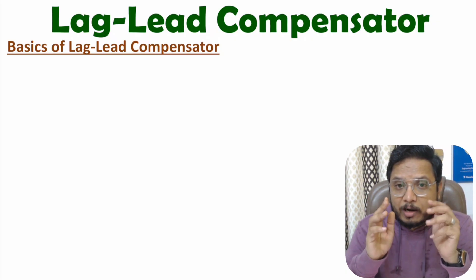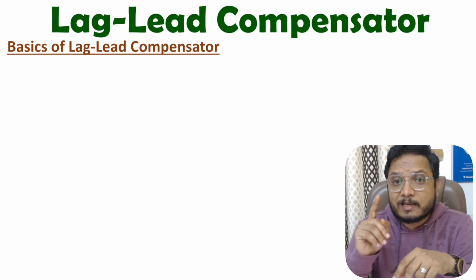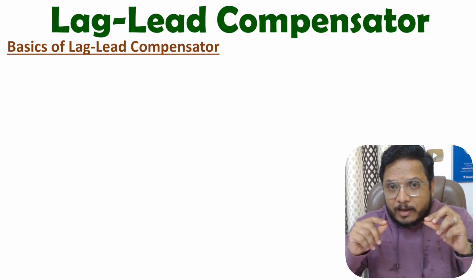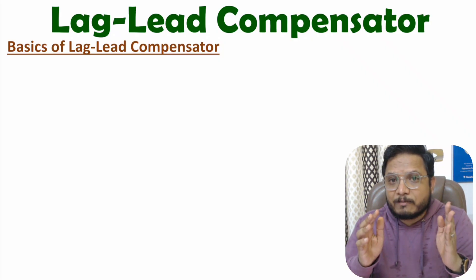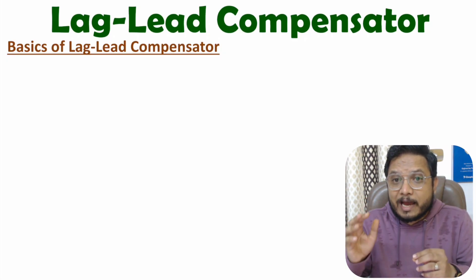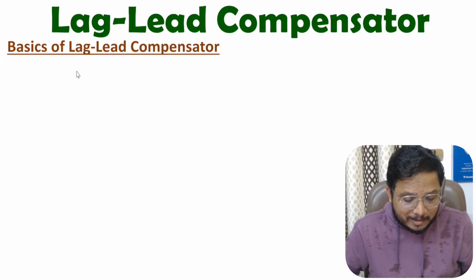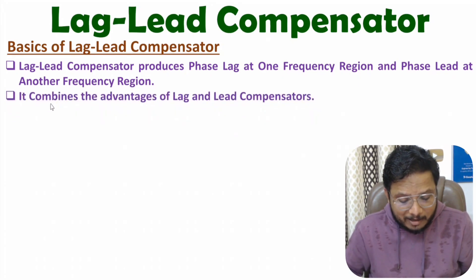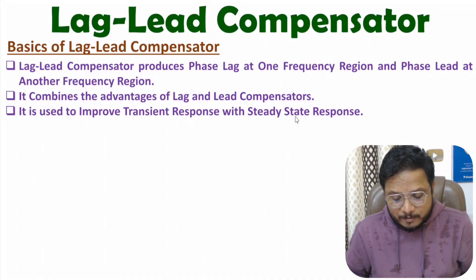In a lead compensator, we add positive phase. In the lag-lead compensator, we add negative phase in one frequency range and lead compensation in another. So the lag-lead compensator produces phase lag at one frequency region and phase lead at another frequency region.